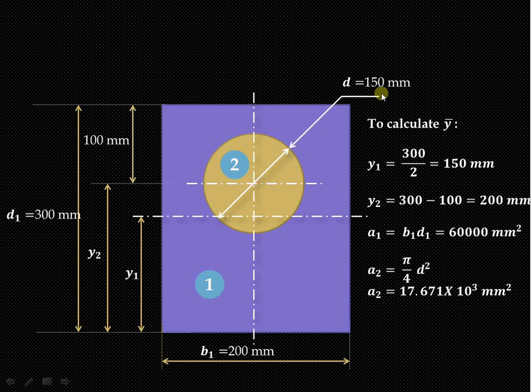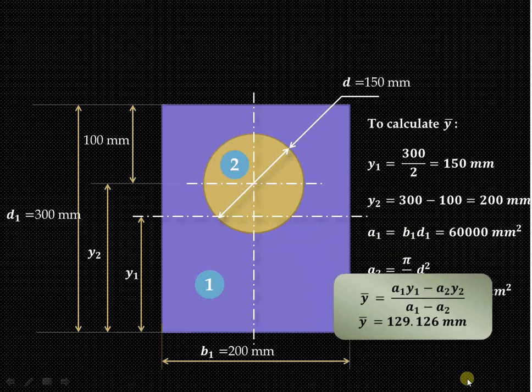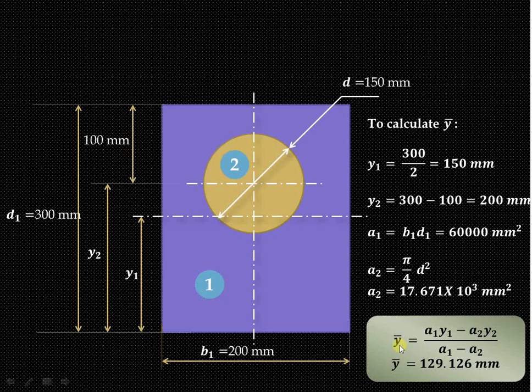Substitute the value of d. d is 150 mm, so this is π/4 × 150², that equals 17.671 × 10³ mm². Now we can easily calculate the ȳ of the cutout section. From the first section we have cut out this second section, so it is (a1y1 - a2y2)/(a1 - a2). Substituting all these values, we get ȳ equal to 129.126 mm from the bottom.